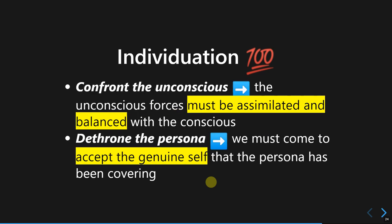The first and hardest strategy is confronting the unconscious. We have to accommodate and admit that we have unconscious wishes and try to balance them with our conscious processes. We don't have to repeatedly repress or deny our unconscious wishes, but we need to accommodate them into reality and balance them with our conscious experience.